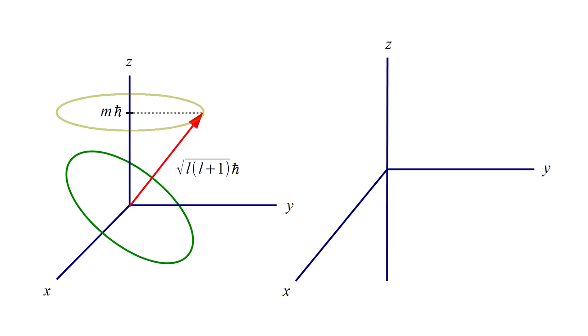Say the quantum number L equals 2. This would be a so-called D orbital. The quantum number M can take on the values minus 2, minus 1, 0, 1, and 2.